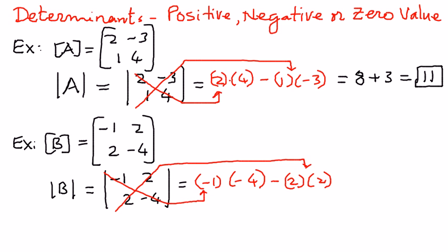When we simplify this: negative 1 times negative 4 is positive 4, and then minus 2 times 2 is 4, so therefore 4 minus 4 is equal to 0. Therefore a determinant can have a zero value, and that is what we have seen here.